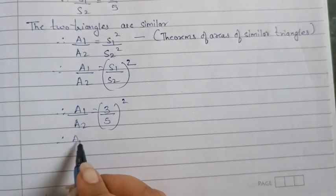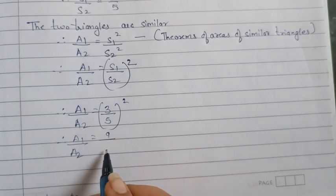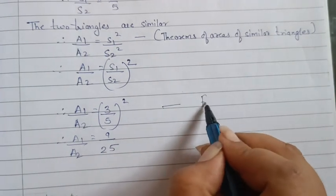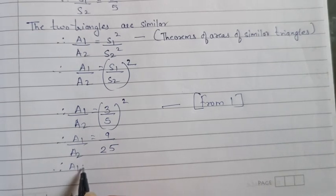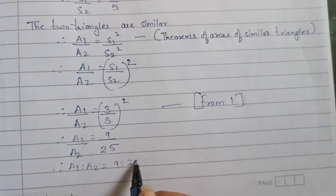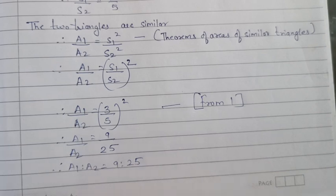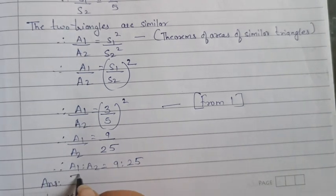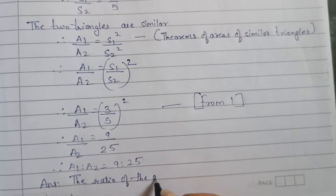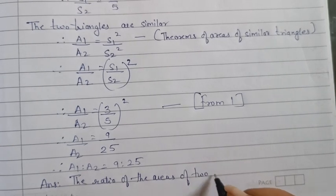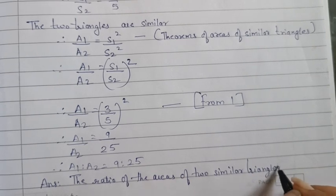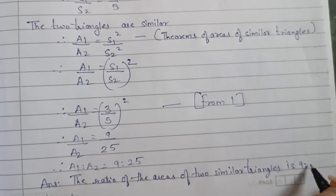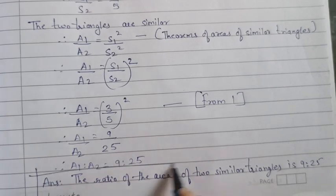Now, what is the square of 3? It is 9, and the square of 5 is 25. So therefore, area 1 is to area 2 is equal to 9 is to 25. The ratio of the areas of 2 similar triangles is 9 is to 25. Hope you have understood this sum.